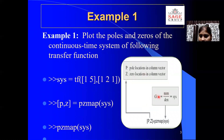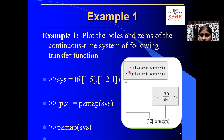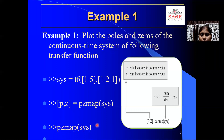G(S) is the transfer function equal to the numerator polynomial divided by the denominator polynomial, which is represented by SYS. The command [P, Z] = PZmap(SYS) returns the location of the poles and zeros of the given transfer function. The next command, PZmap(SYS), returns the pole zero location in the S-plane and produces the plotting figure for poles and zeros.